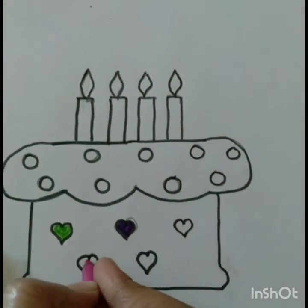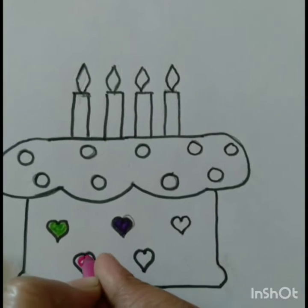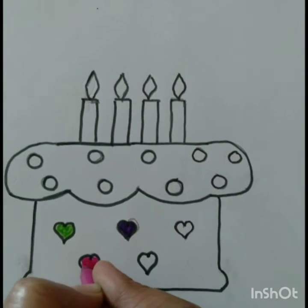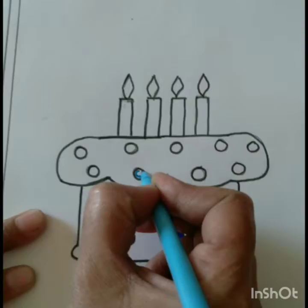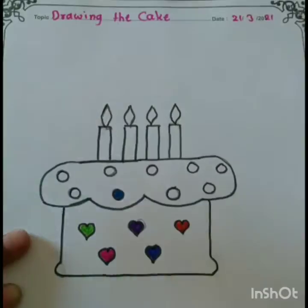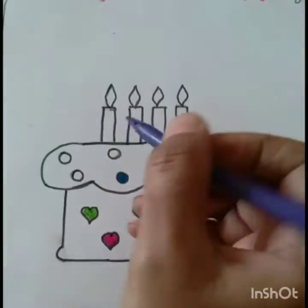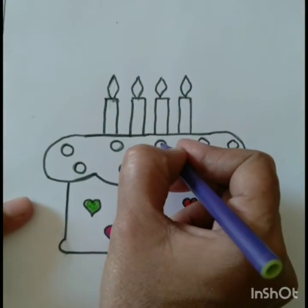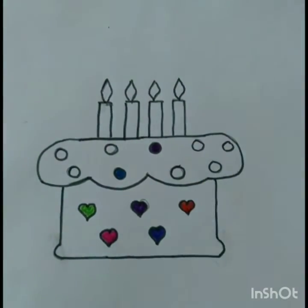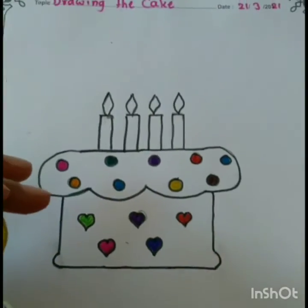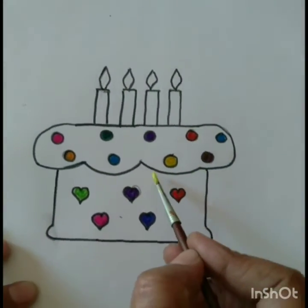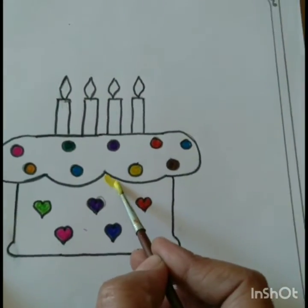Children, now we are coloring the circle shapes with different beautiful colors — blue and purple colors — and then with yellow color.